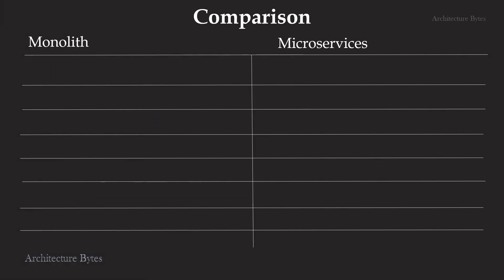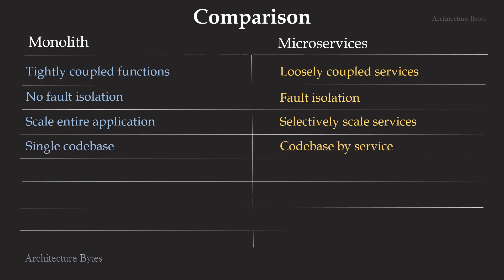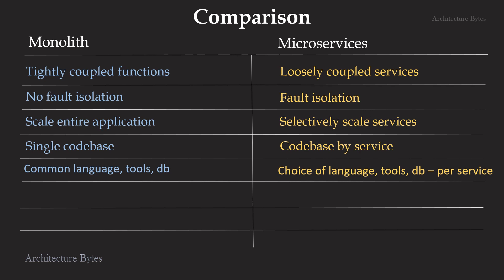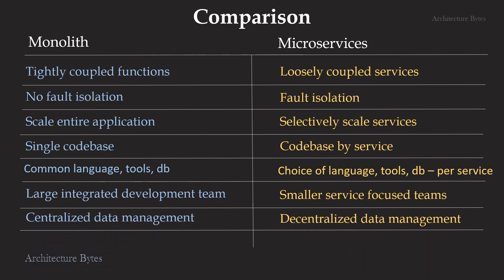Let's do a quick comparison of monolith versus microservices architecture. Tightly coupled functions versus loosely coupled services. No fault isolation versus fault isolation. Scale entire application versus selectively scale services. Single code base versus code base by service. Common language, tools, and database versus choice of language, tools, and database per service. Large integrated development team versus smaller service-focused teams. Centralized data management versus decentralized data management. Release entire application at a time versus release per service at a time.